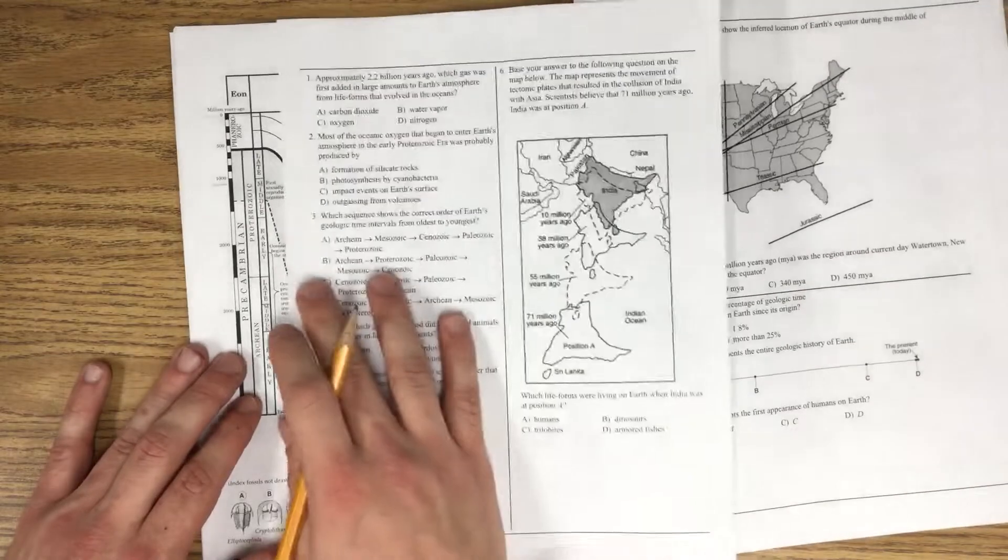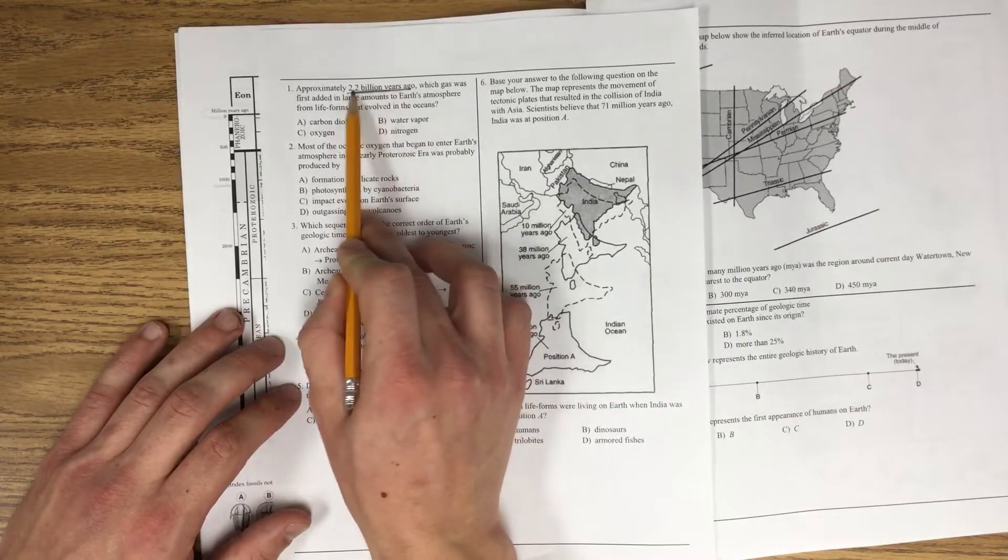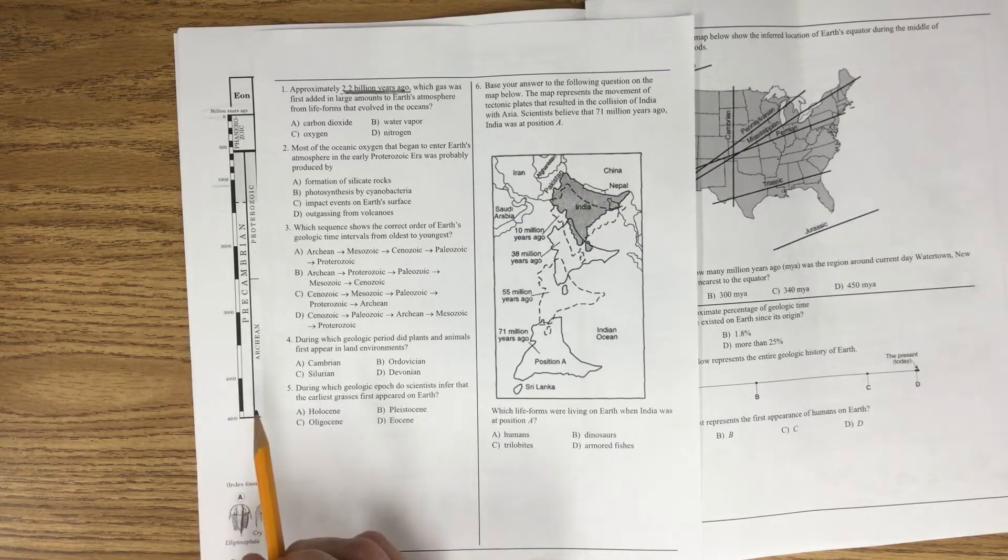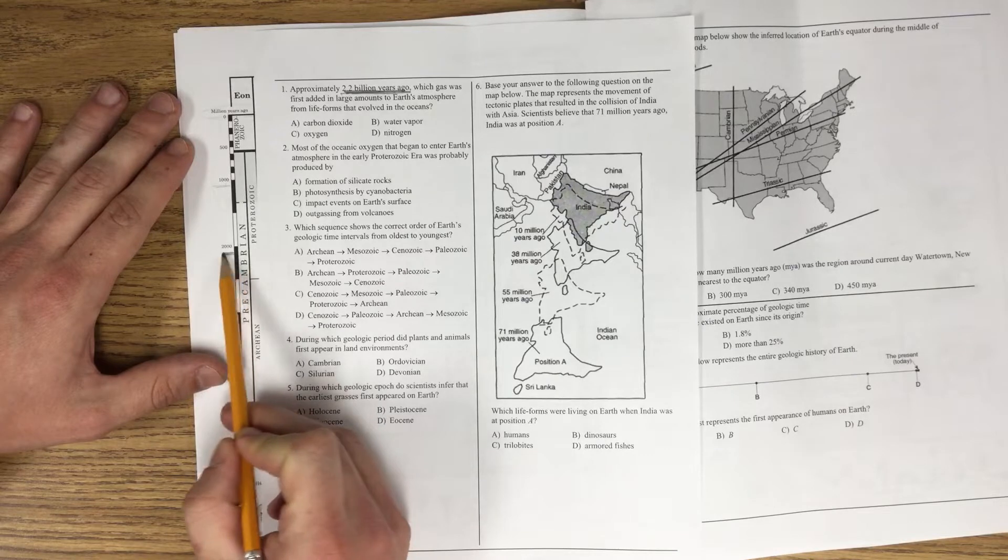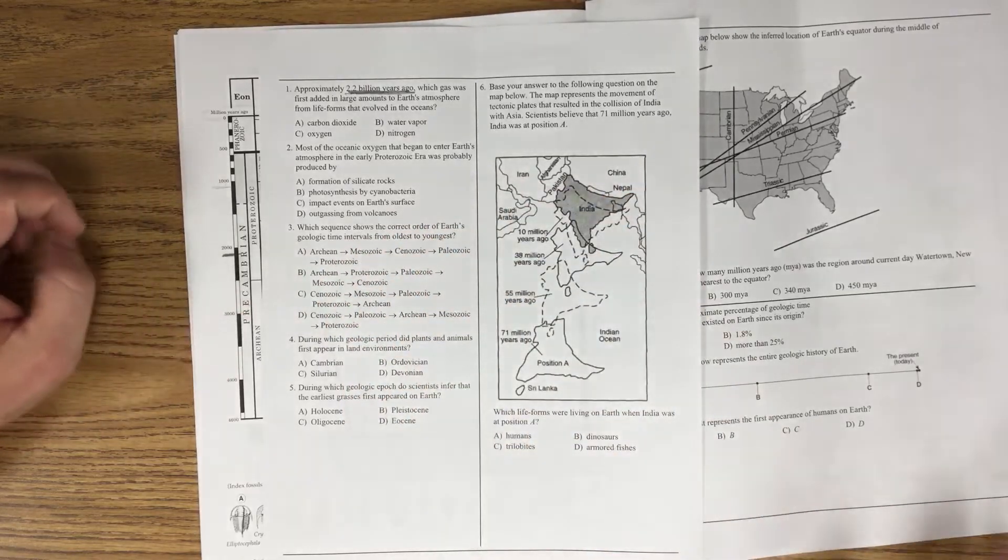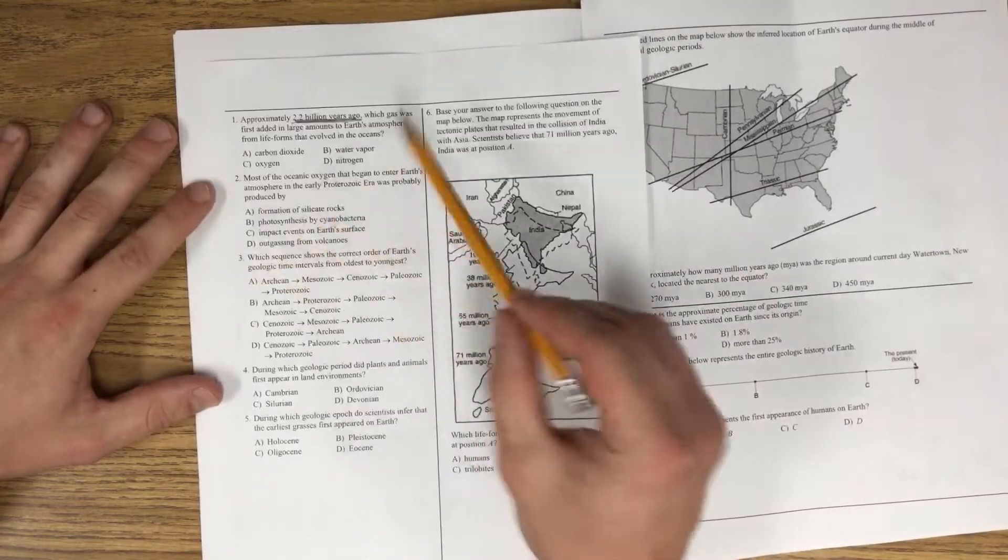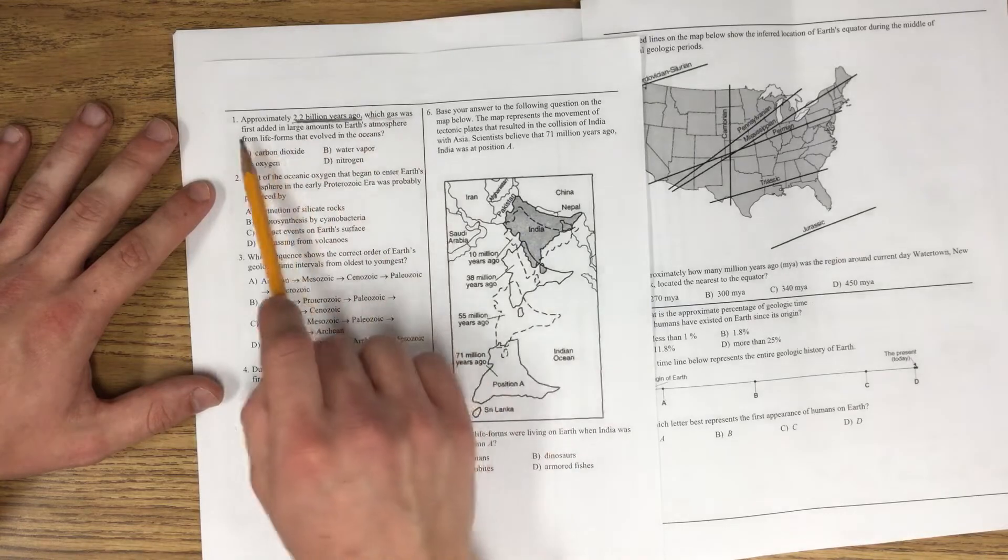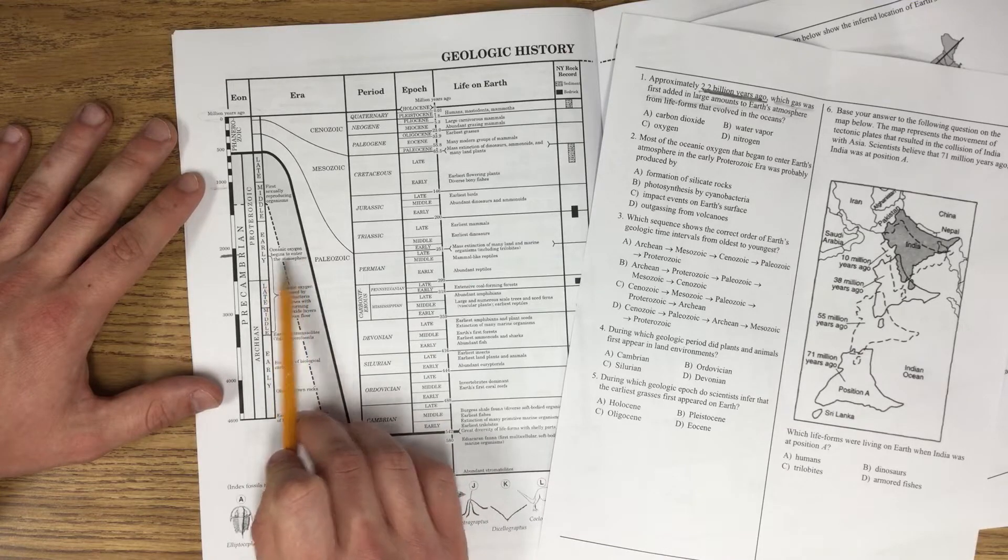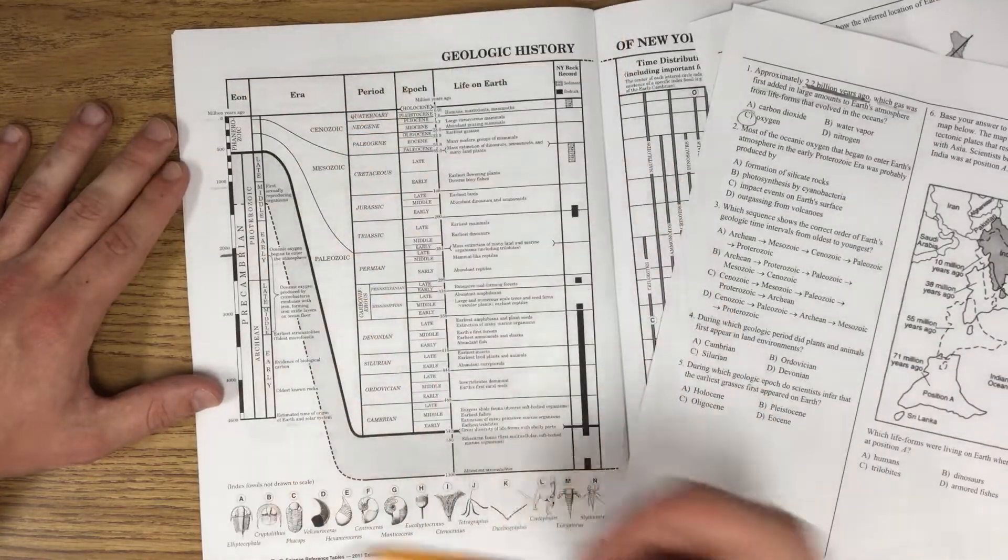So just looking at this column here, I've got question number 1. Approximately 2.2 billion years ago. So we figured out that the Earth is 4.6 billion. So 2.2 billion would be just about here, in between 2,000 and 3,000. Okay. So approximately 2.2 billion years ago, which gas was first added in large amounts to the Earth's atmosphere? If you look here, oceanic oxygen begins to enter the atmosphere. Super easy. It's right there. You just have to know that you have to look on this page.